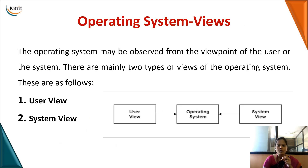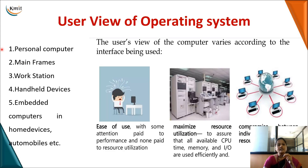Now we have seen what are the objectives of an operating system. When you see this operating system, it will be viewed in two ways: one is from the user perspective, the other is from the system perspective. From the user perspective, we will see what services the user wants from an operating system. The viewpoint of the user changes depending on the type of system the user is using.